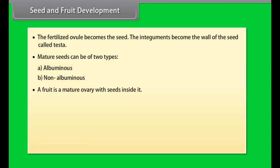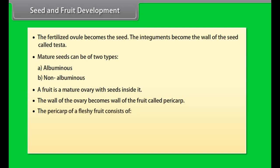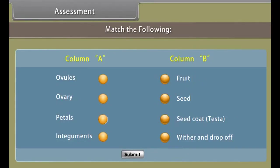The fertilized ovule becomes the seed, and the integuments become the seed wall called the testa. Mature seeds can be albuminous or non-albuminous. A fruit is a mature ovary with seeds inside it; the wall of the ovary becomes the wall of the fruit called the pericarp. The pericarp of a fleshy fruit consists of the endocarp (around the seed), mesocarp (fleshy portion), and exocarp (the skin).